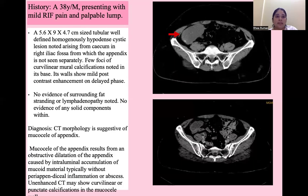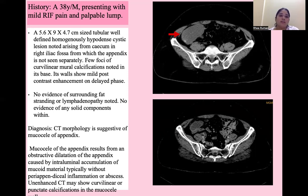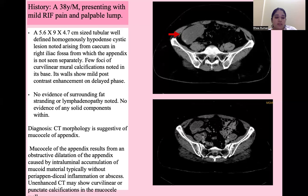Third is a 38-year-old male presenting with mild right iliac fossa pain and a palpable lump. There is a tubular, well-defined, homogeneously hypodense cystic lesion arising from the cecum in the right iliac fossa, from which the appendix is not seen separately. Few foci of curvilinear calcifications are noted at its base, and its walls show mild post-contrast enhancement on delayed phases. There was no surrounding fat stranding, lymphadenopathy, or solid components — suggestive of mucocele of the appendix. Mucocele of the appendix results from obstructive dilatation caused by intraluminal accumulation of mucoid material without peri-appendiceal inflammation or abscess, and may show curvilinear or punctate calcification.